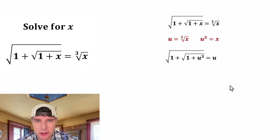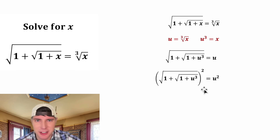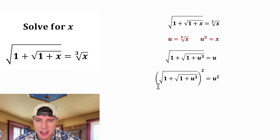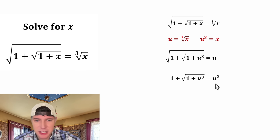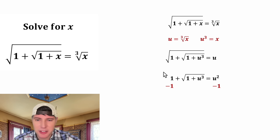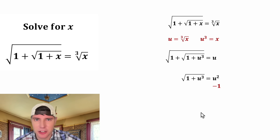And now we can solve for u. For the next step, let's square both sides of the equation. On the left-hand side, this giant square root and this outer square will cancel each other out. And then we can subtract 1 from both sides — on the left-hand side the positive 1 and negative 1will cancel each other out, and on the right-hand side we have u squared minus 1.